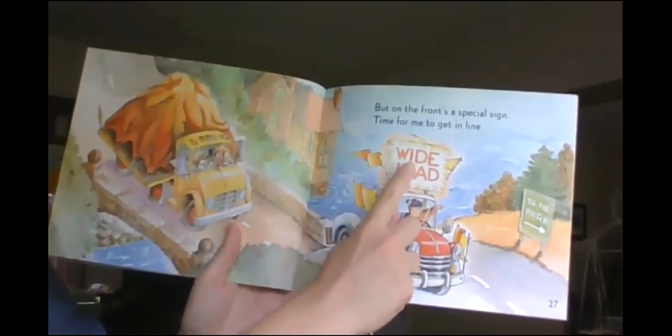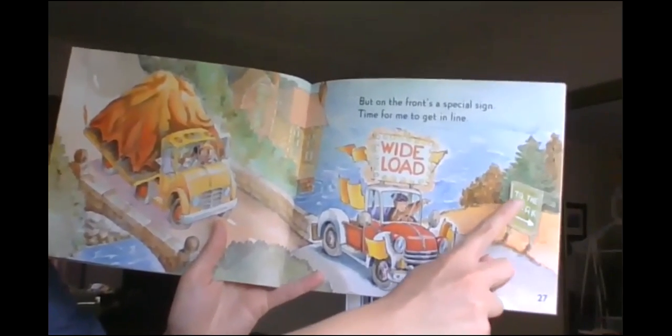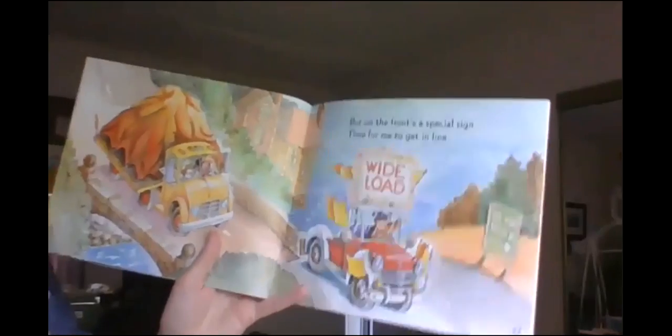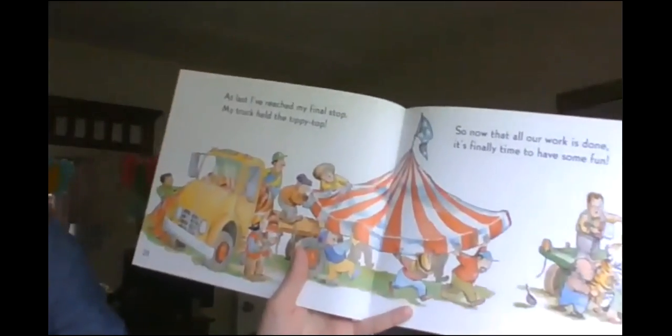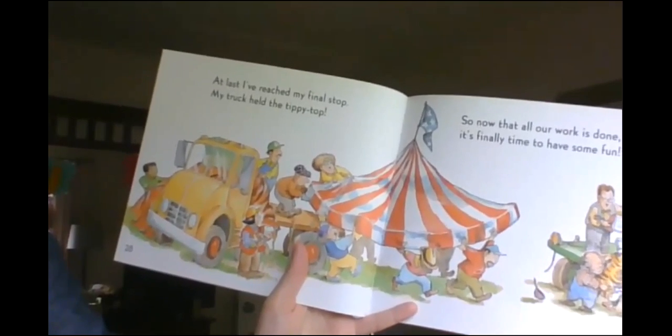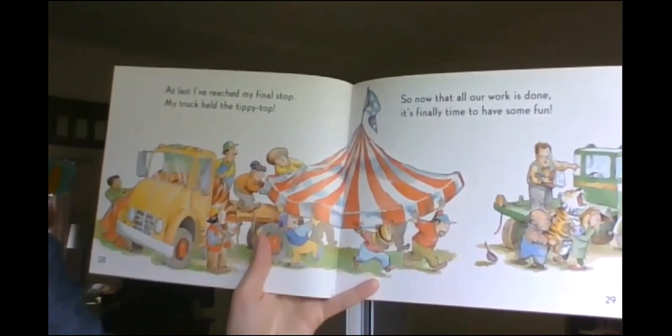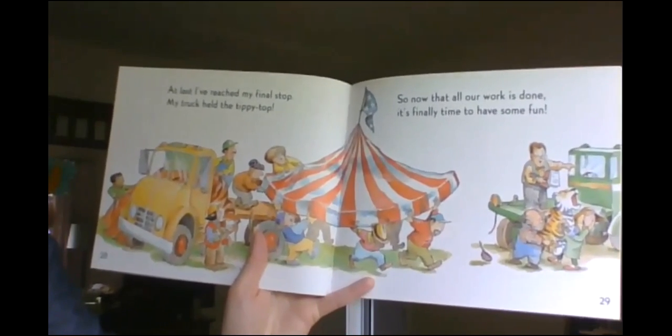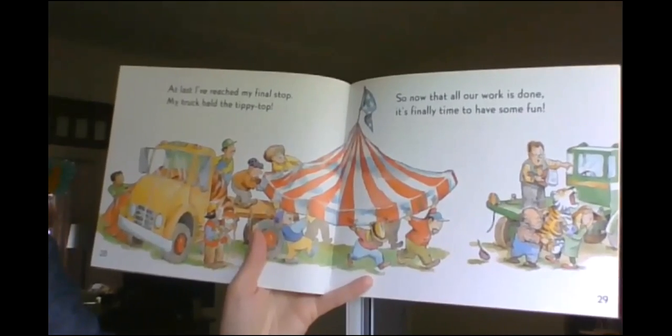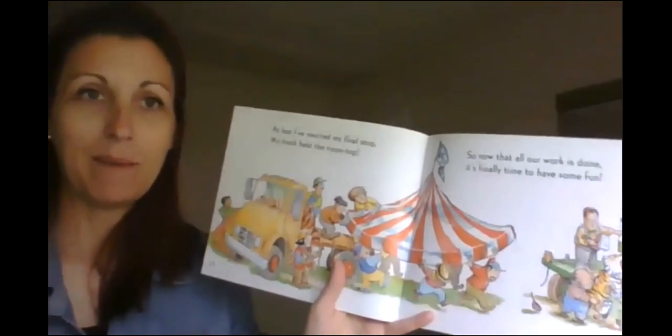Nine and zero is still nine. But on the front's a special sign. Time for me to get in line. It says, wide load. But this sign says, to the park. I wonder if this is an animal park? Like a zoo maybe? At last I reached my final stop. My truck held the tippy top. So now that all our work is done, it's finally time to have some fun. The tippy top. Maybe it's a circus.